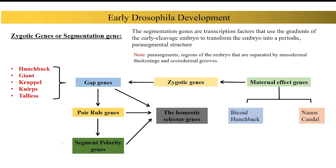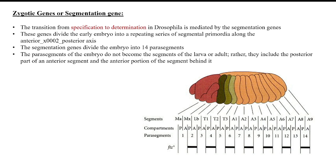Welcome to this YouTube channel. I am Usha Yadav. Today we are going to discuss the second category of segmentation genes, that is pair rule genes. To recap our last video lecture, we discussed gap genes. In the case of gap genes, mutations can create a gap in the fly embryo. A gradient is created after the formation of the anterior-posterior axis — this gradient consists of hunchback, giant, krüppel, and tailless.